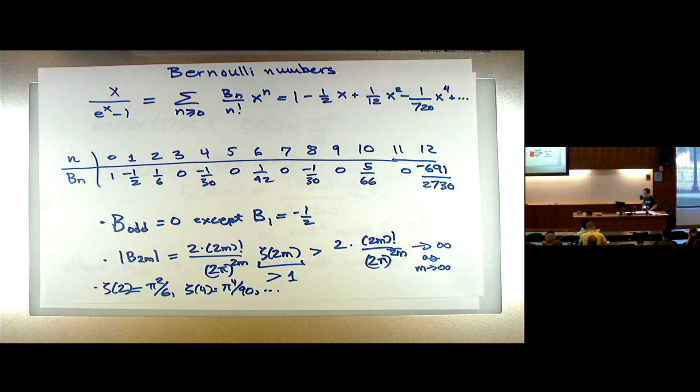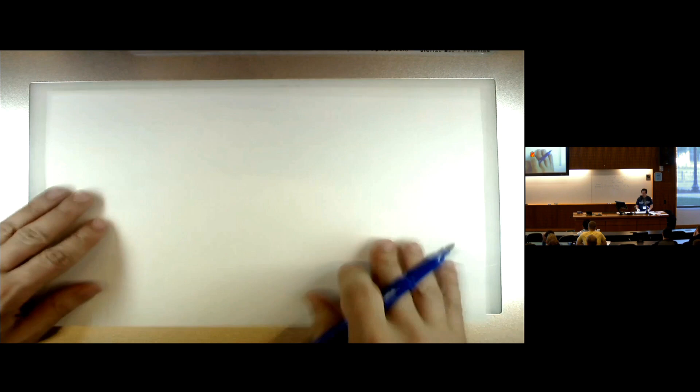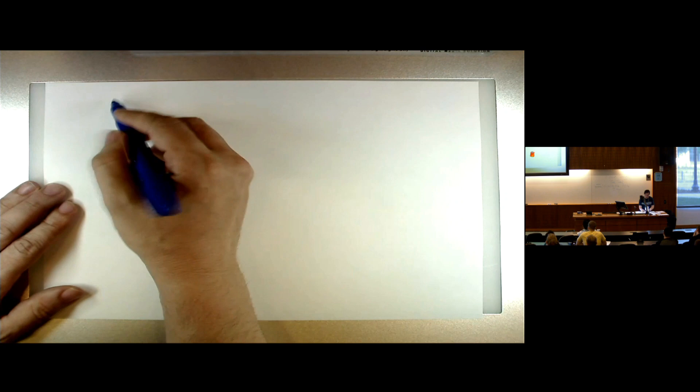There is one controversy about Bernoulli numbers: should the first Bernoulli number be −1/2 or +1/2? You just define it as −1/2, but in the literature there are other conventions where +1/2 is better. If you wanted to change the power series to change −1/2 to +1/2, what could you do? Just add x. Whether they teach the controversy of should b_1 be −1/2 or +1/2 — I don't think that would go over too well in schools.